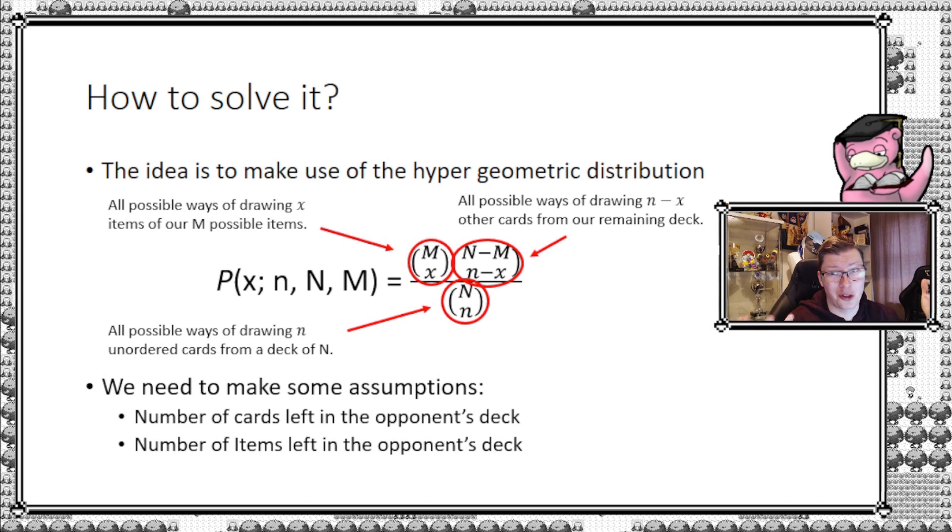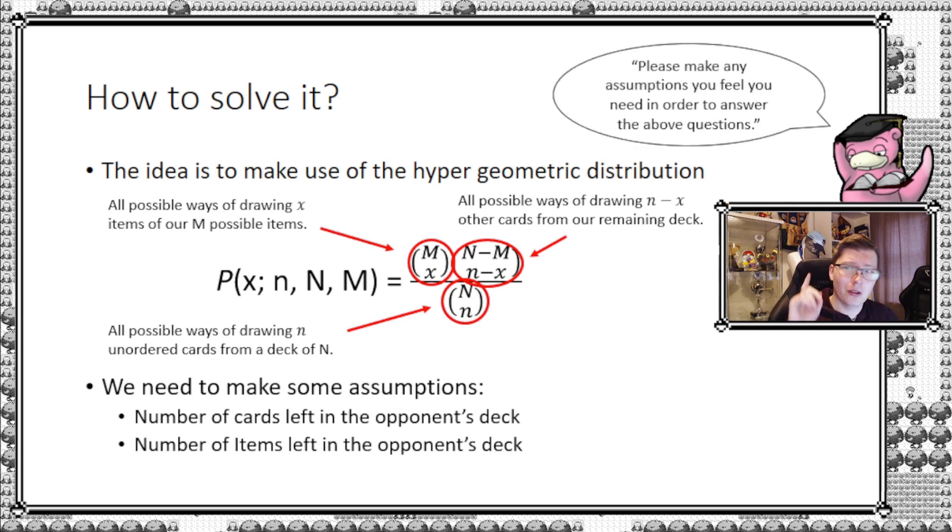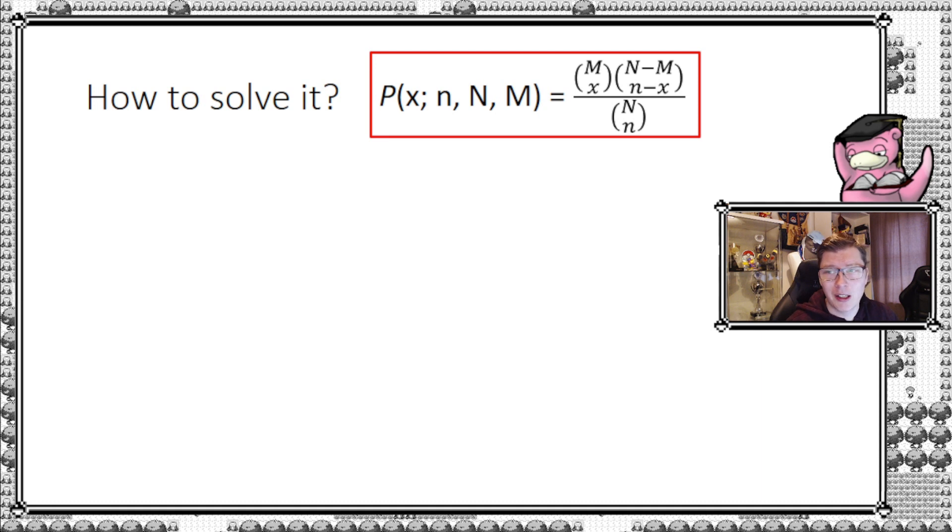The assignment text for the exam said: you can feel free to make any assumptions you need to in order to answer the above questions. In this particular case we need those two assumptions: number of cards left in your opponent's deck and number of items left. Then we can go ahead and try to solve it for a particular set of numbers.